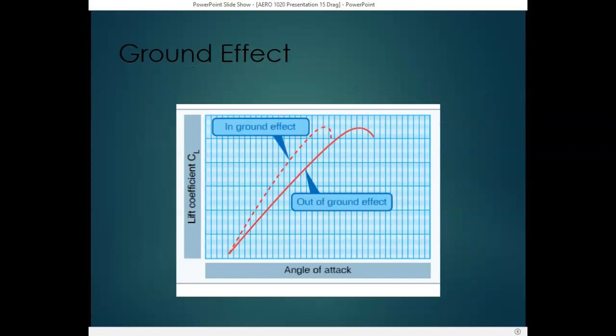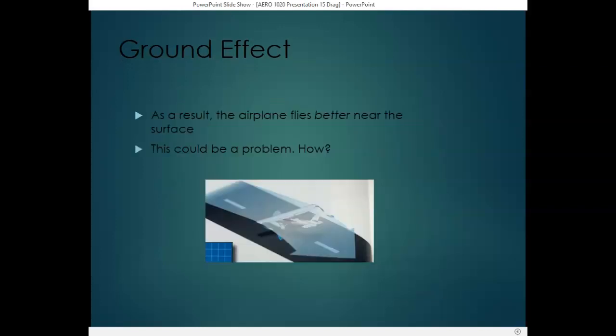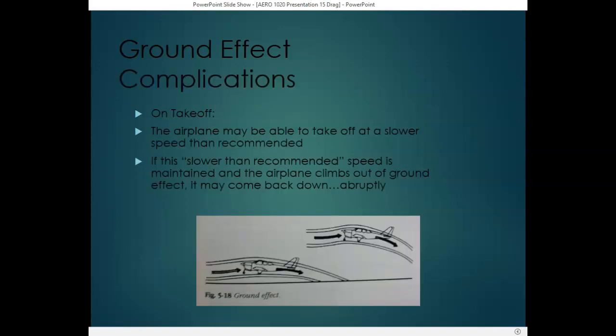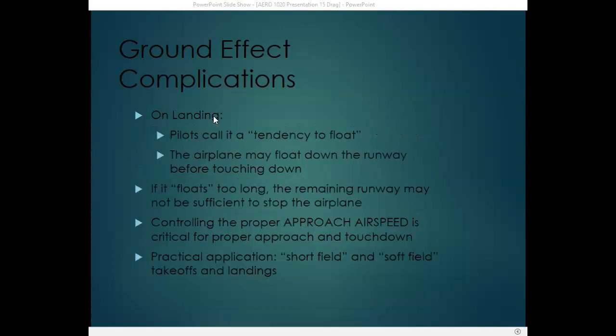The coefficient of lift also increases in ground effect. The two lines in this graph represent the same wing — one in ground effect and one out of ground effect — and at the same angle of attack, the wing in ground effect generates a higher coefficient of lift. As a result, the airplane actually flies better near the surface. On landing, ground effect could cause the airplane to float down the runway before touching down, and if it floats too far, it may not have enough remaining runway to stop.